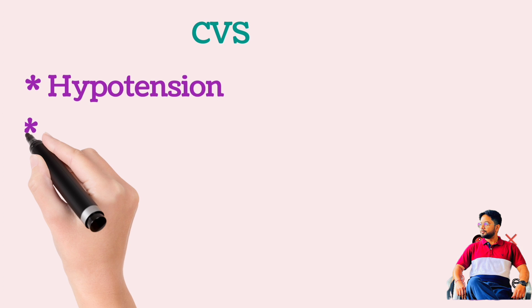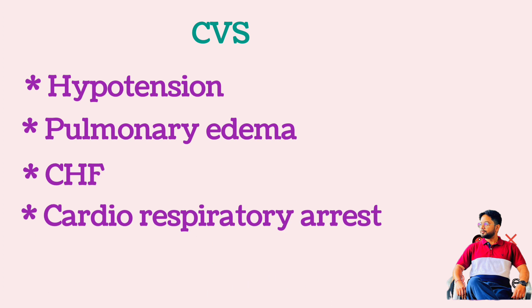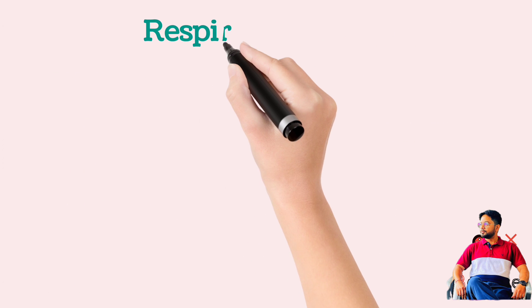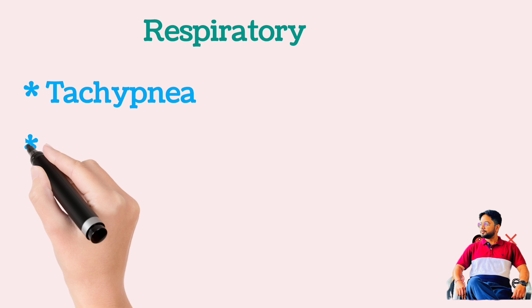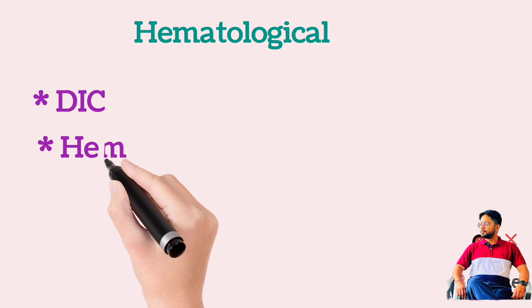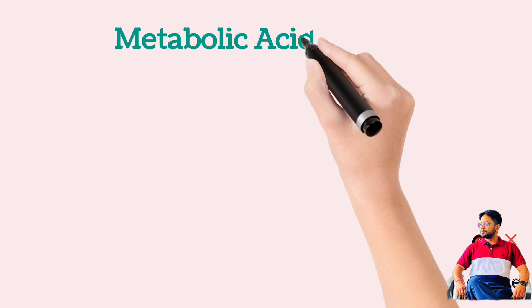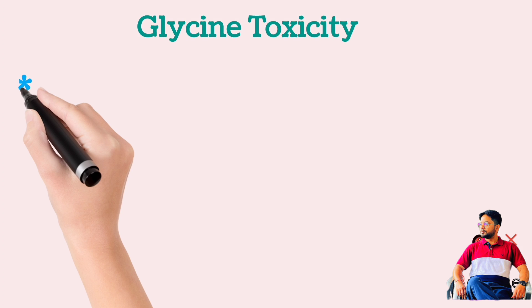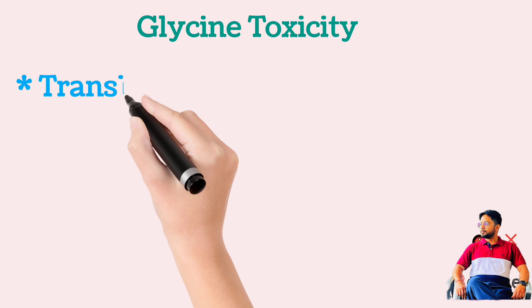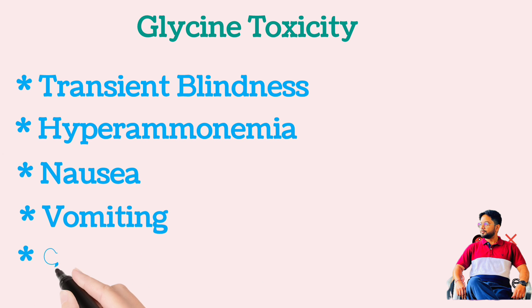In the cardiovascular system there may be hypotension, pulmonary edema, congestive heart failure, and cardiorespiratory arrest. In the respiratory system there is tachypnea and hypoxemia. Hematological symptoms include DIC and hemolysis. There may be acute renal failure, metabolic acidosis, and glycine toxicity symptoms including transient blindness, hyperammonemia, nausea, vomiting, and coma.